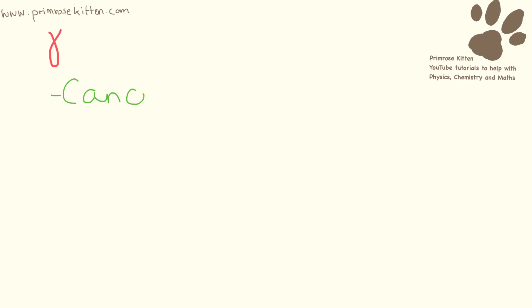Gamma radiation can be used for cancer treatments, and there are two different ways this can be done. With a particle gun, we are firing the radiation at a tumour — we can use that to kill the tumour, to kill all of the living cells in there. For this type of use, you're going to need something that has a very long half-life because it is external to the body, in a piece of machinery, and we need it to last a very long time.